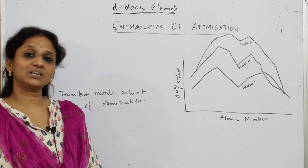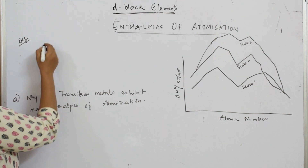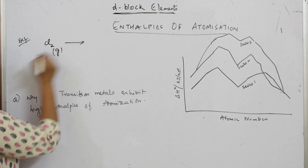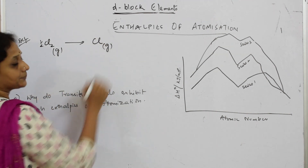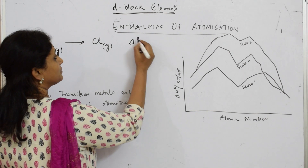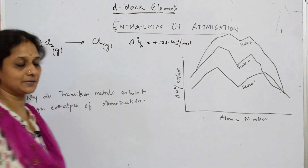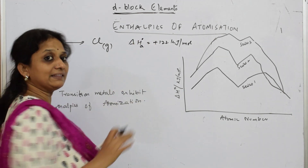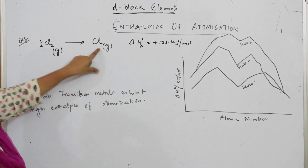Let's cover the concept of enthalpy of atomization. Take chlorine gas as an example — if I take half a mole of chlorine gas, I get chlorine atoms, with an enthalpy change of +122 kilojoules per mole. Enthalpy of atomization is the amount of enthalpy change when one mole of the gaseous atom is obtained from its elements in their standard physical state.